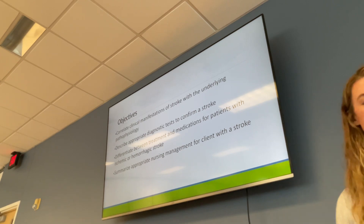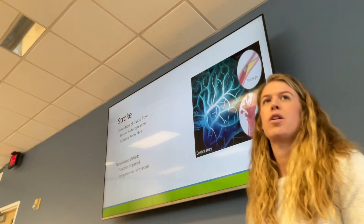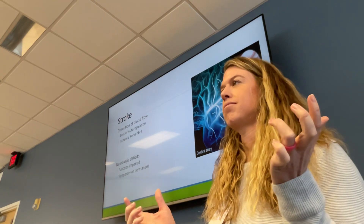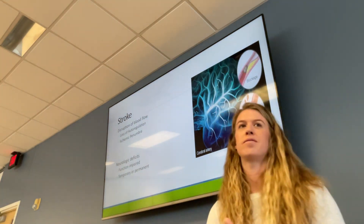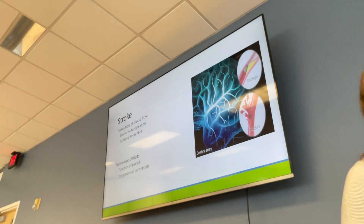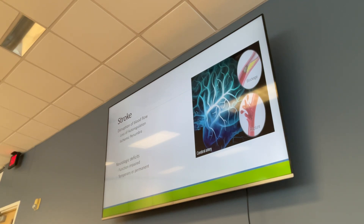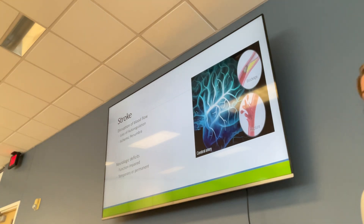What do we know about strokes? A blood clot in the brain is one type. There's also hemorrhagic stroke, which is bleeding in the brain, so we have a couple of different types.